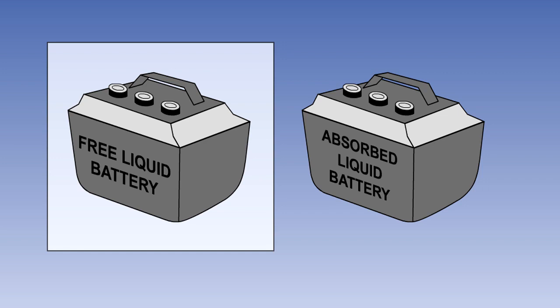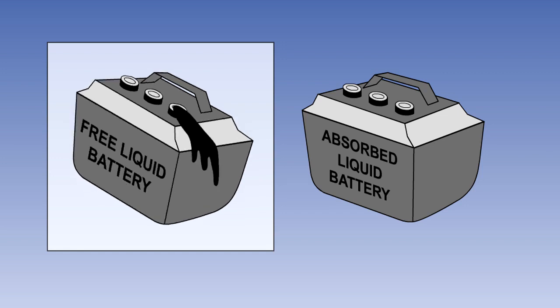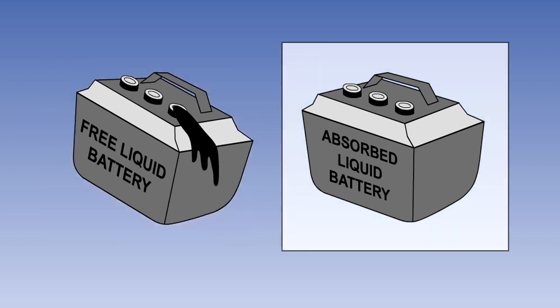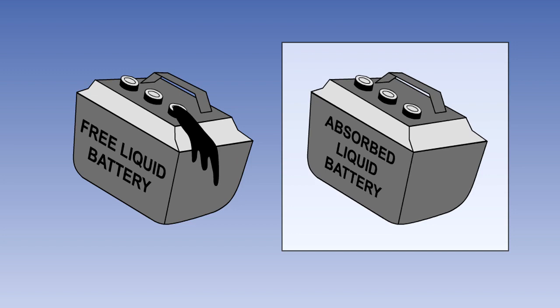In older types of lead acid battery, the acid is in liquid form, and great care has to be taken to avoid any spillage. More modern batteries are of the absorbed liquid type, where most of the electrolyte is absorbed into the active materials in the plates, making it less prone to spillage.